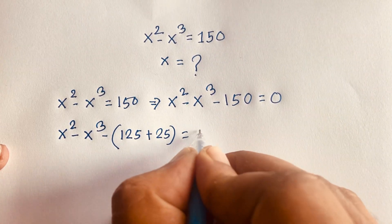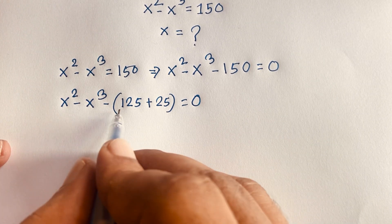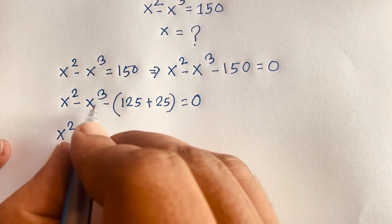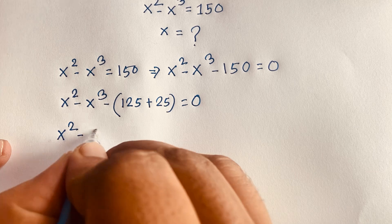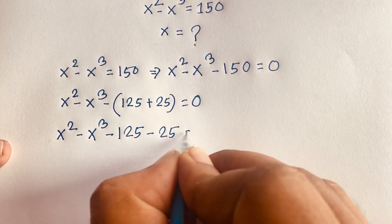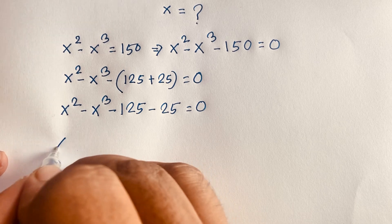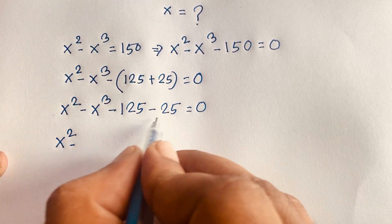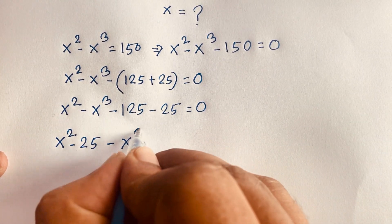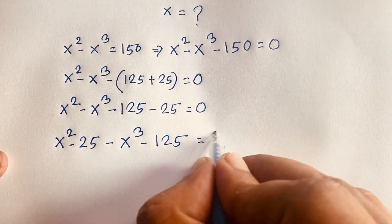Then, I can rearrange: here is x squared minus 25, and here is negative x cubed minus 125, all equal to 0. So grouping them, we get the term x squared minus 25 and the term negative x cubed minus 125, where 125 is equal to 0.